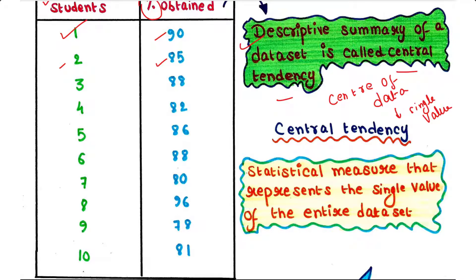Actually, it does not provide information regarding individual data from the dataset. Instead, it gives a summary of the whole dataset. Therefore, central tendency is defined as the statistical measure that represents the single value of the entire dataset. So from this entire dataset, we can provide a single value which represents the whole dataset. That is called central tendency.